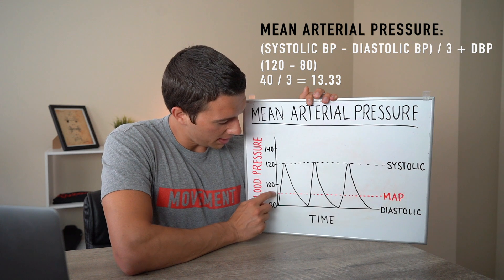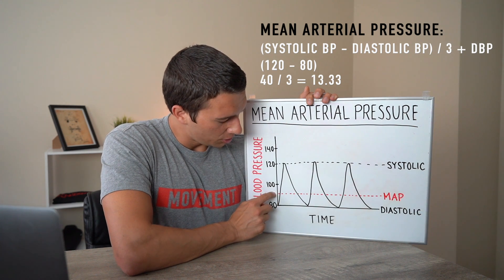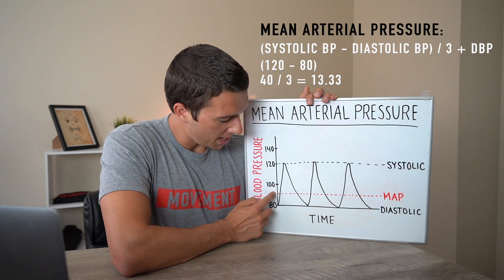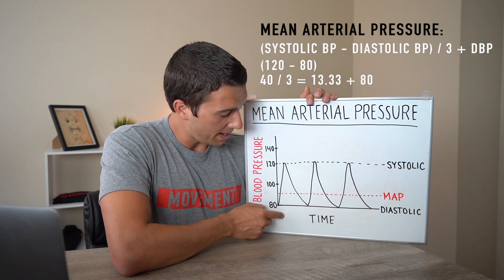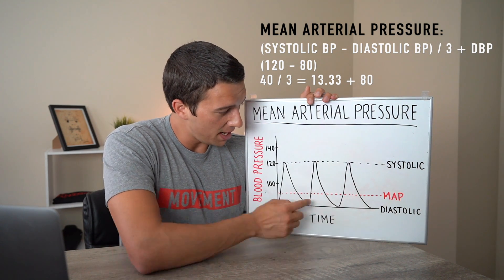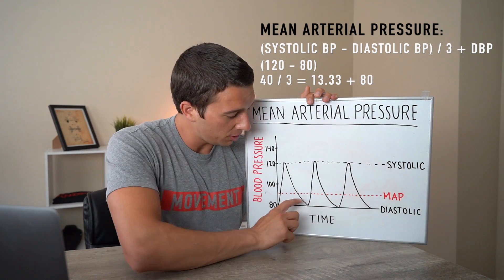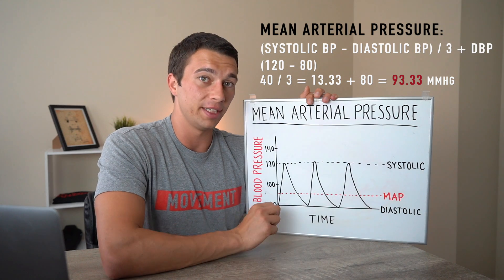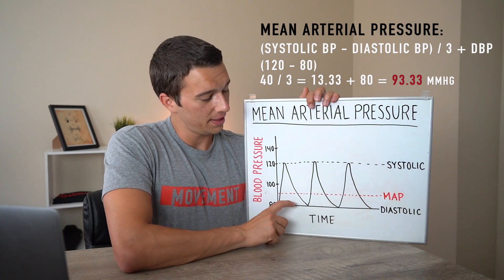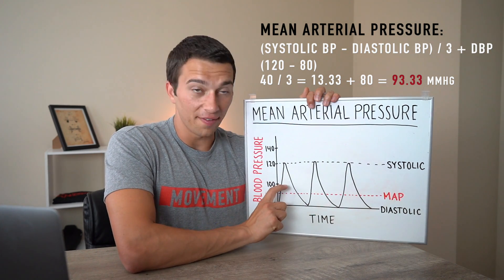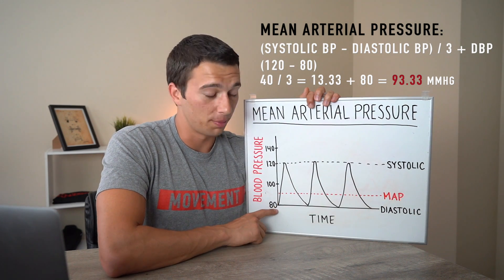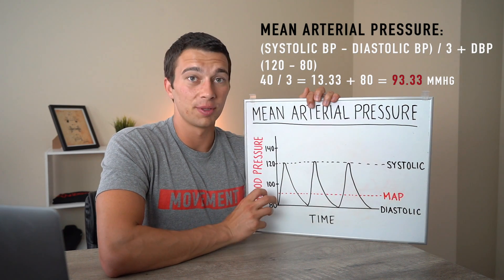That 13.33 is the difference above diastolic, so adding 80 back on gives us the mean arterial pressure of approximately 93 mmHg. The reason it's one-third of the way up — closer to diastolic — is that we spend more time filling than contracting.